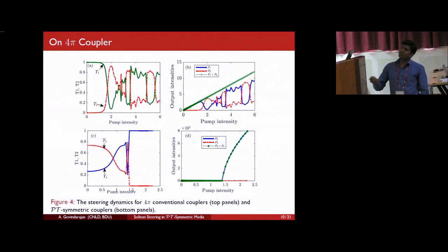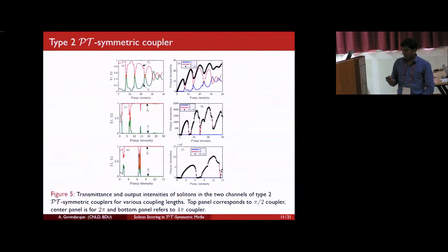We also extended this fiber coupler to 4π. We observe almost the same dynamics with a further amplification in the output intensity. Now we focus on the type 2 PT-symmetric fiber couplers, where the first waveguide is having loss and the second waveguide is having equal amount of gain. Look at this one. This corresponds to 5 by 2 and this corresponds to 2π and 4π. Here, there exists a multi-stability which is not complete. It is always oscillating. And as in the previous case, here too, it is showing some perfect switching with a huge amplification. But note that the amplification lies in the output intensity of the second waveguide.